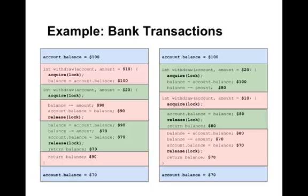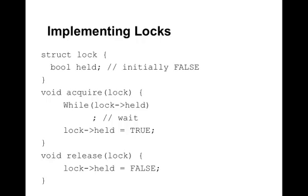This means we don't have a race condition anymore, because we don't have code that depends on which thread runs first. Without the locks, we had a race condition where we could get different values depending on when the threads ran. So how do you implement locks? A simple way would be to have a lock be just a boolean variable. When trying to acquire a lock, we sit in a while loop reading the locked variable and waiting until it's false. We then set lock held to true. However, this doesn't work — let's see why.